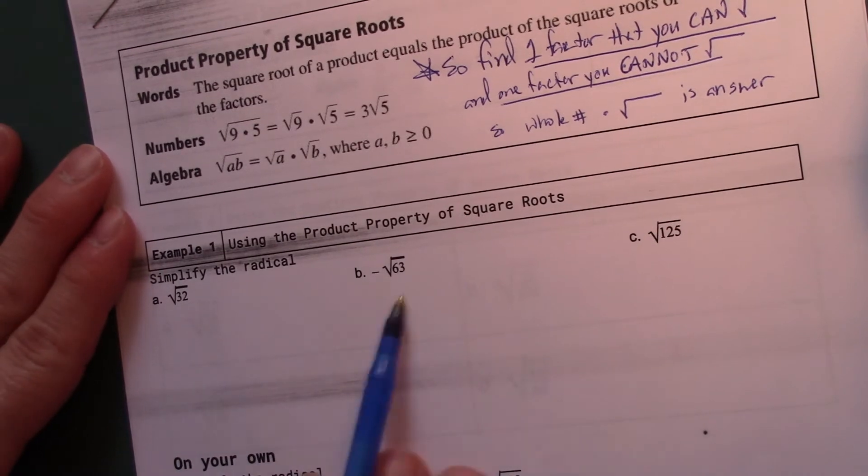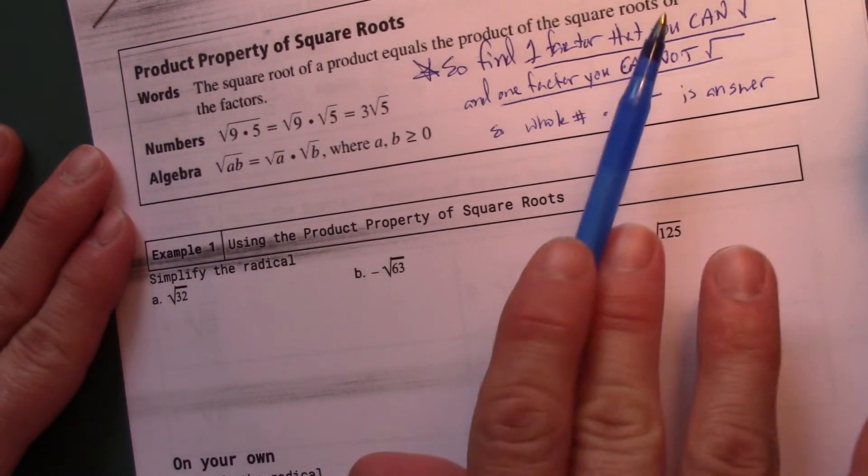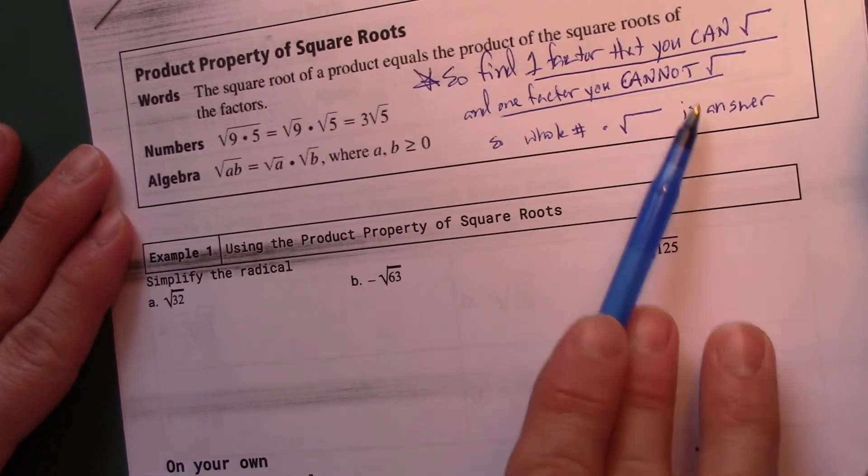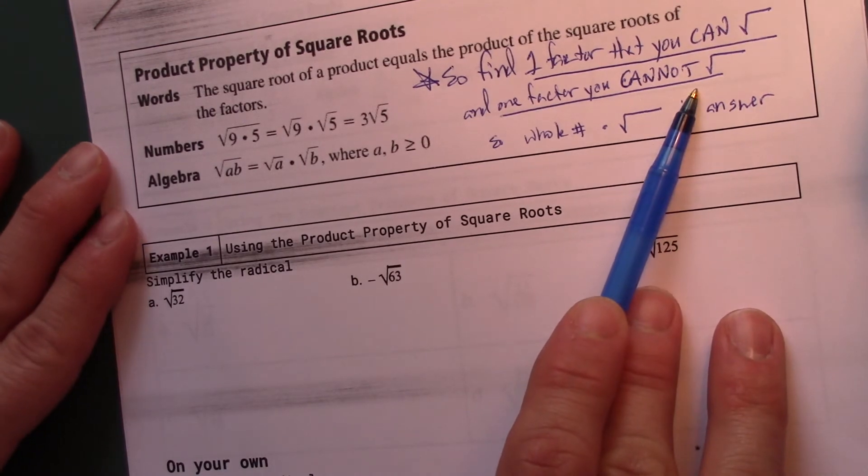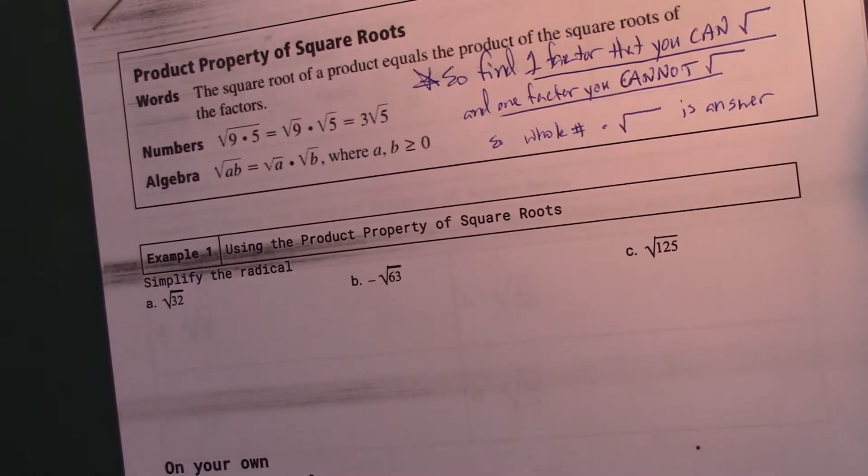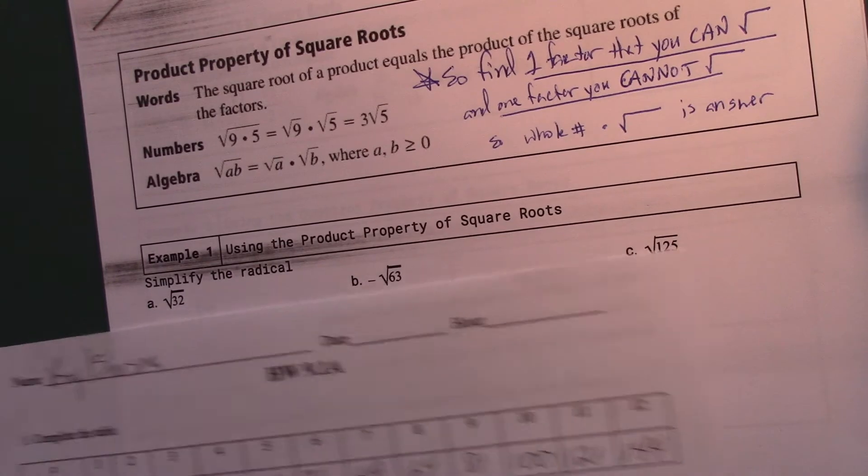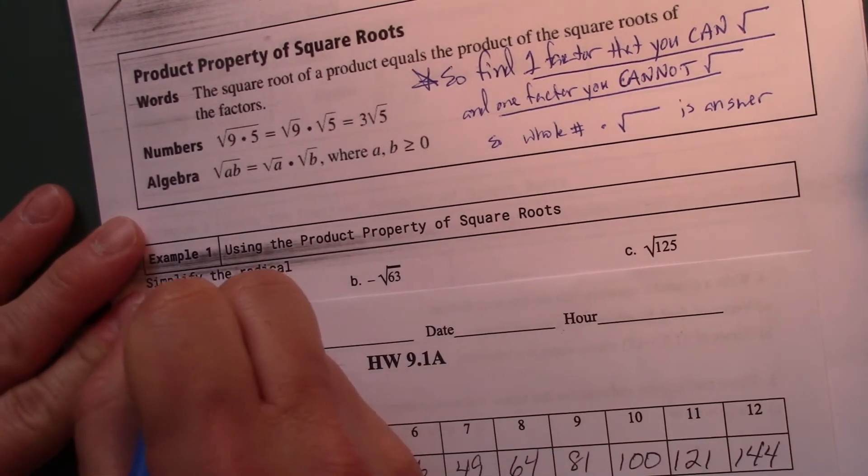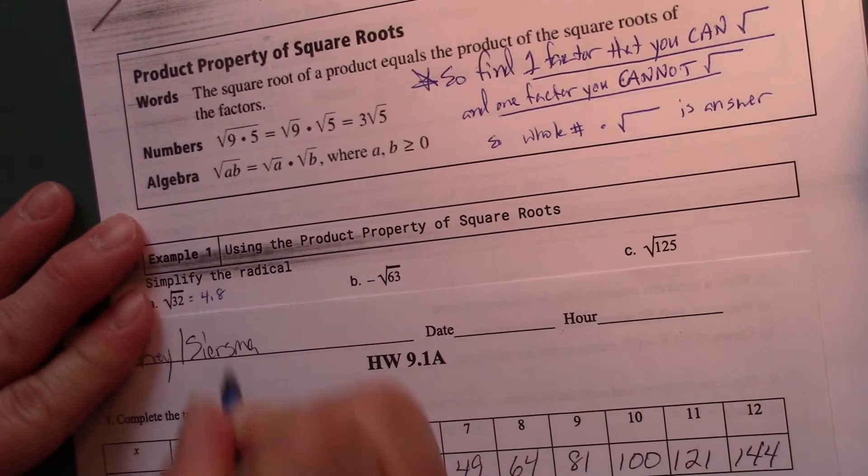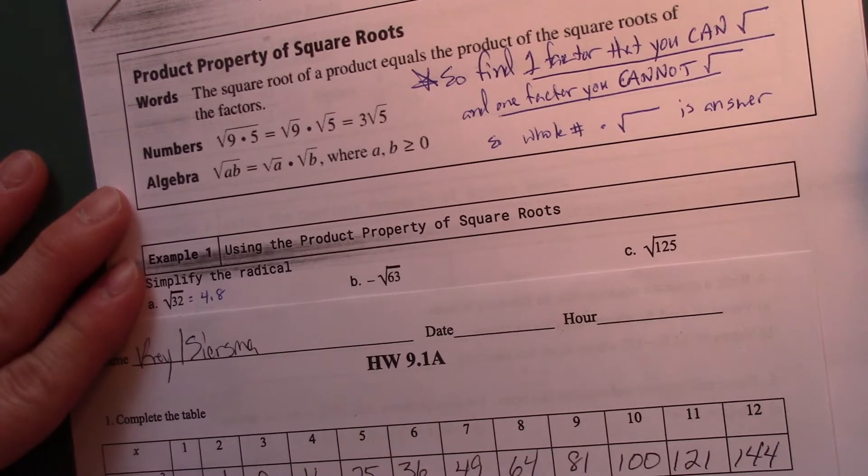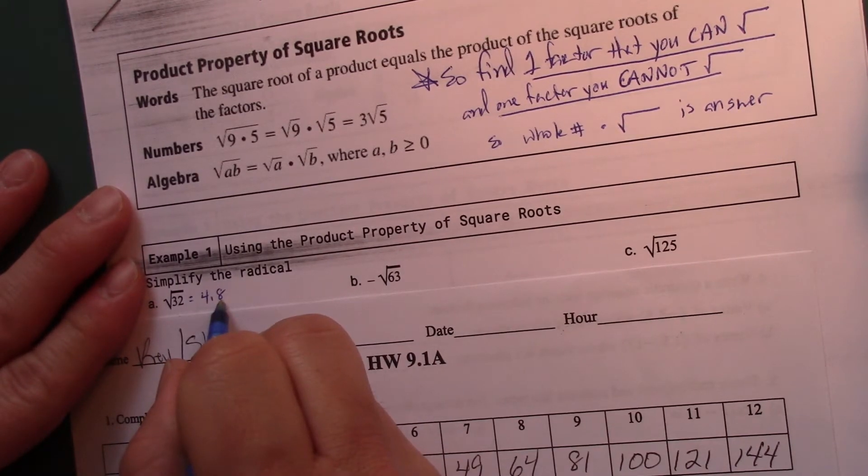So why do we want to do that? Because we want to break all of these into something I can take the square root of and something I cannot take the square root of. And we're trying to find the biggest number. So when I look at those numbers I see 4, and 4 will go into 32, 4 times 8. The problem is I can still break down 8 further.